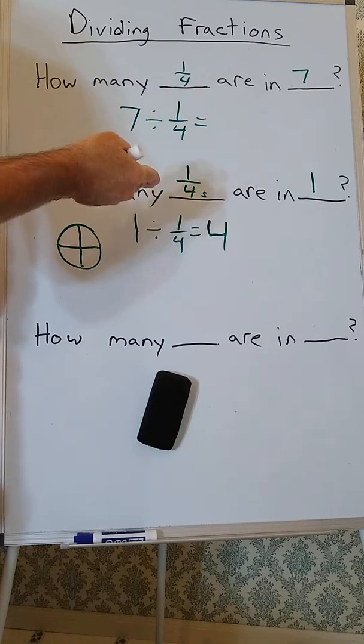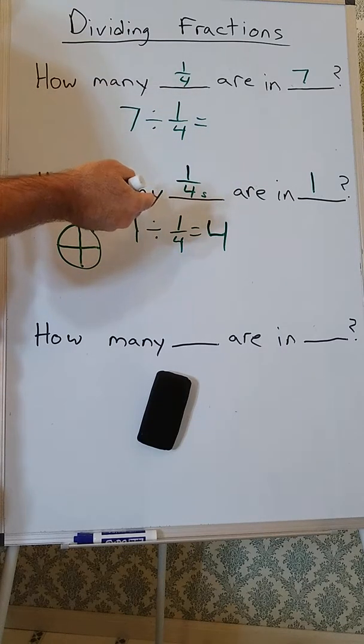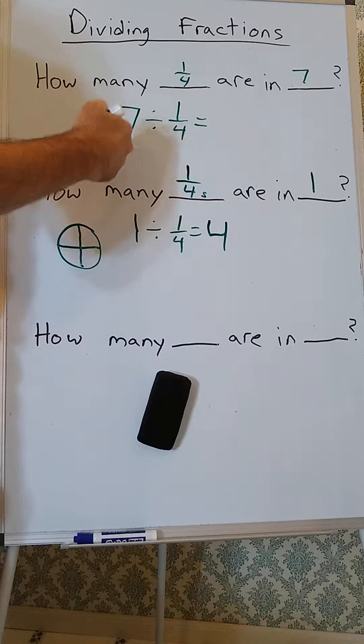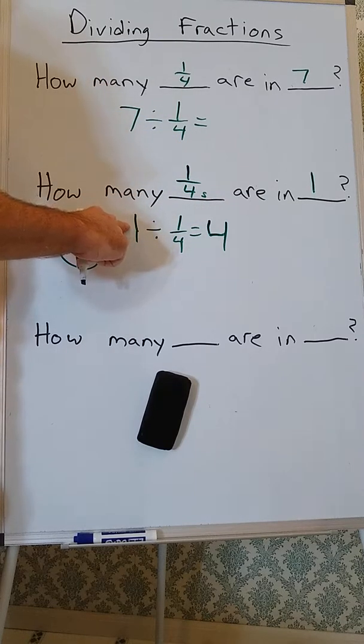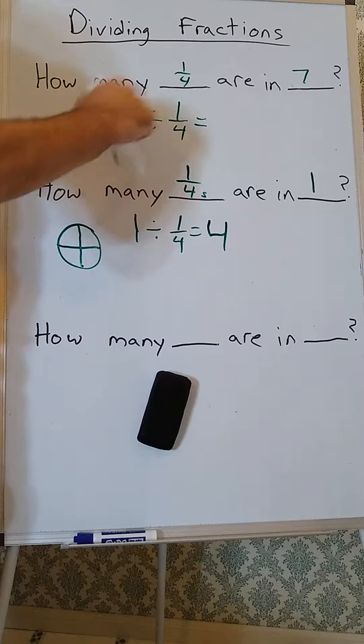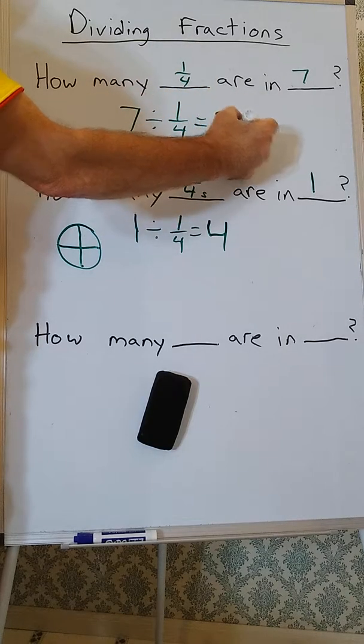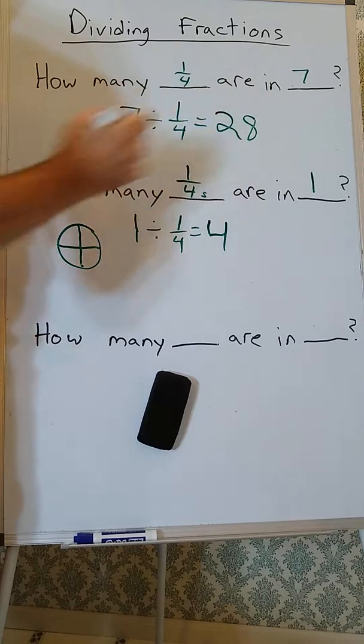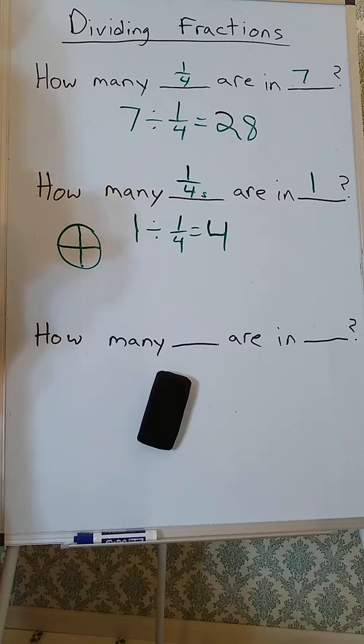2 will give me 8 fourths. And if I continue that, I see each whole is going to have 4 fourths. So I'm going to have 7 times 4, or 7 divided by 1 fourth is 28.